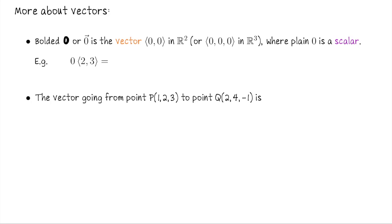For example, the scalar zero times a vector gives a result where each entry is just a plain old scalar zero. In other words, it gives us the zero vector.